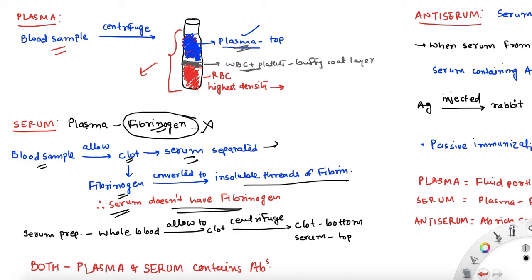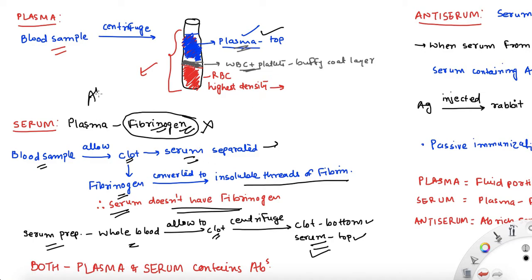How do you separate serum in the lab? Take whole blood and let it clot — just let it sit. Don't add any anti-clotting agent. Once clotting has happened, centrifuge the sample. The clot will sit at the bottom and the top supernatant you get is serum. The difference between plasma and serum is only the fibrinogen. Since we are just separating fibrinogen, the antibodies remain — plasma has antibodies, and serum also has antibodies.